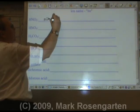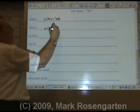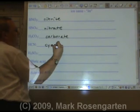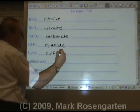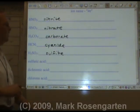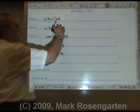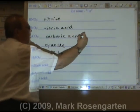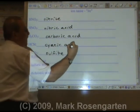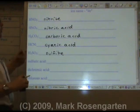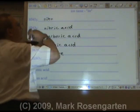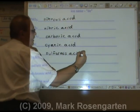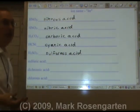To summarize: NO₂ is nitrite, NO₃ is nitrate, CO₃ is carbonate, CN is cyanide, SO₃ is sulfite. If the ending is -ate or -ide, replace it with -ic acid. If the ending is -ite, replace it with -ous acid. Note: 'sulfous acid' would technically be the result, but it's more commonly called sulfurous acid.